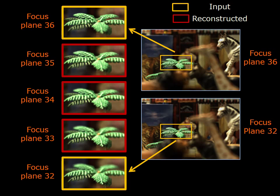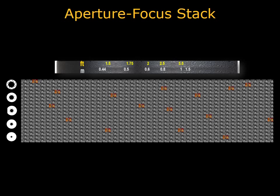Also, intermediate leaves are brought into focus. Next, we explore varying both focus and aperture. Using only the 16 input images highlighted, we reconstruct the entire epsilon photography stack as it varies with focus and aperture settings. This corresponds to over 1,000 images.